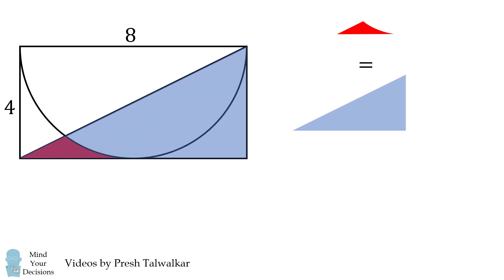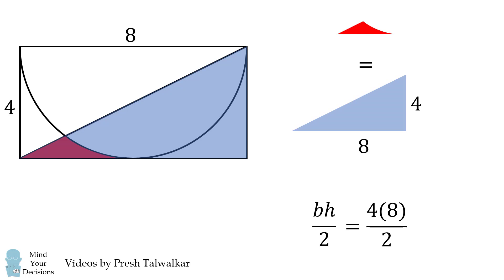The right triangle is relatively straightforward. The area is its base times its height all over 2, so we take 4 times 8 and divide it by 2 to get 16.